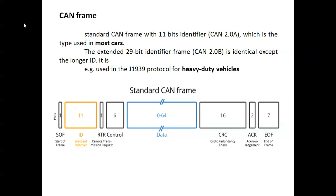RTR means Remote Transmission Request. The standard CAN frame can transfer 0 to 64 bits of data. It also includes a 16-bit CRC (Cyclic Redundancy Check) and a 2-bit acknowledgement field.